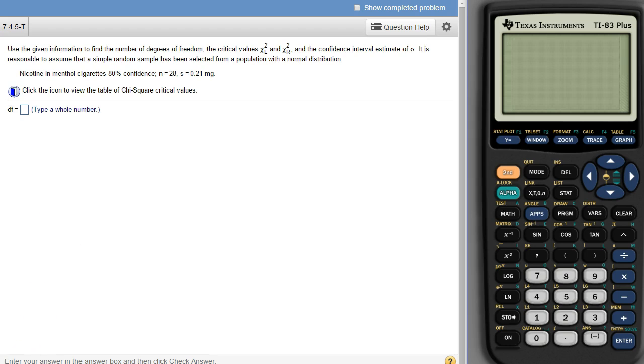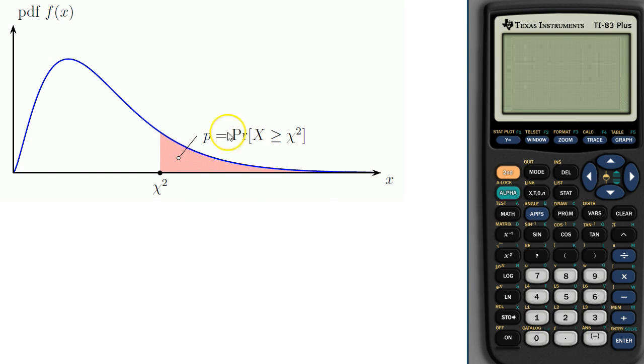Hey stats class, this is a homework question from your 7.4 homework set. In this we are trying to estimate the population standard deviation, and the distribution for the possible sample standard deviations is no longer bell-shaped. It's got a chi-square shape which is a right-skewed distribution, so it doesn't have that nice symmetric shape.